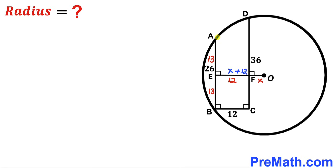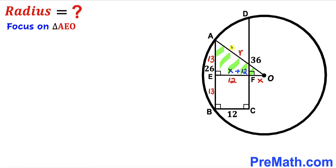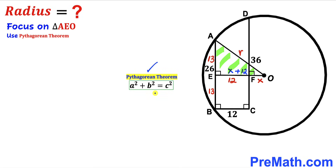In the next step I am going to connect center O with vertex A. We can see that AO is the radius of the circle, which I will label as lowercase r. Let's focus on right triangle AEO and apply the Pythagorean theorem. The hypotenuse is r, and the two legs are (x + 12) and 13.